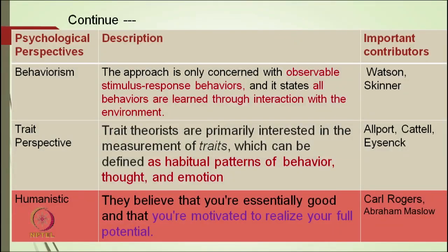Another perspective is the cognitive perspective, which focuses more on thinking processes. The main focus is on the study of mental processes including perception, thinking, memory, and judgment. Hermann Ebbinghaus and Piaget have been main contributors. Behaviorism is another perspective focusing more on overt behavior rather than cognitive processes. Watson and Skinner are important contributors, and this approach is only concerned with observable stimulus-response behaviors, stating all behaviors are learned through interaction with the environment. Trait perspective focuses on the measurement of traits — habitual patterns of behavior, thoughts, and emotions — with Allport, Cattell, Eysenck, and others working in this area.